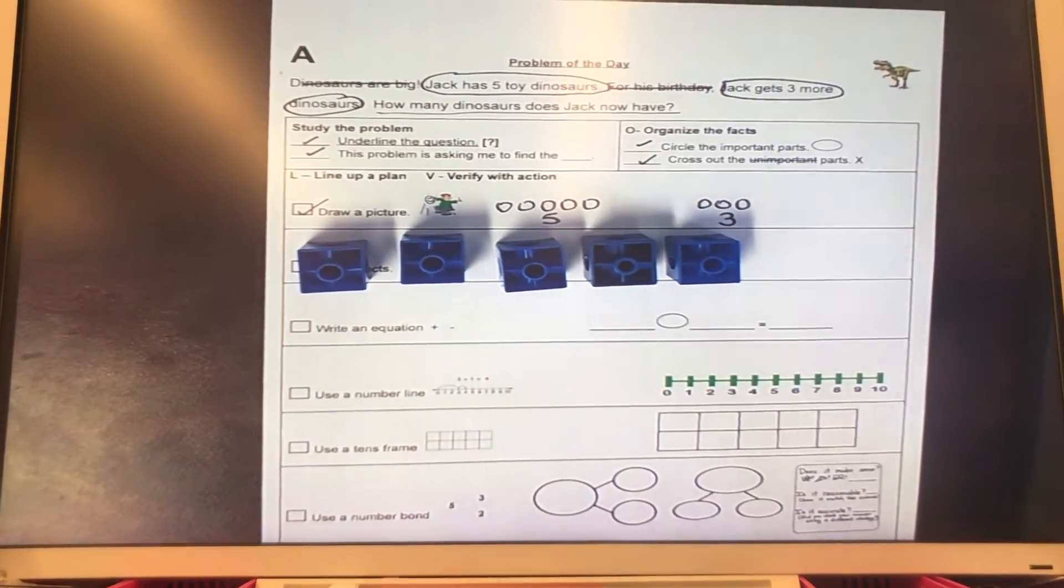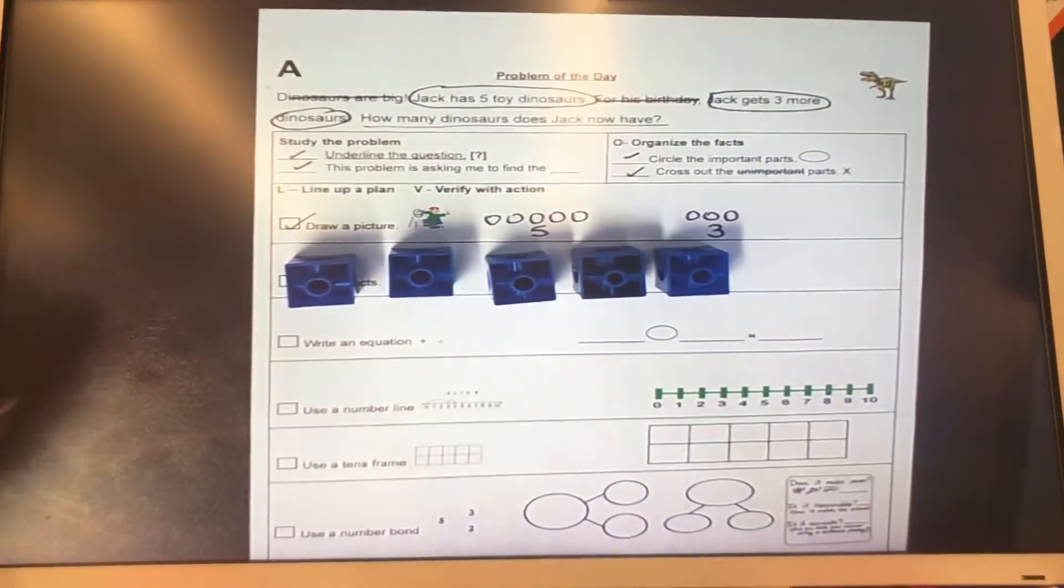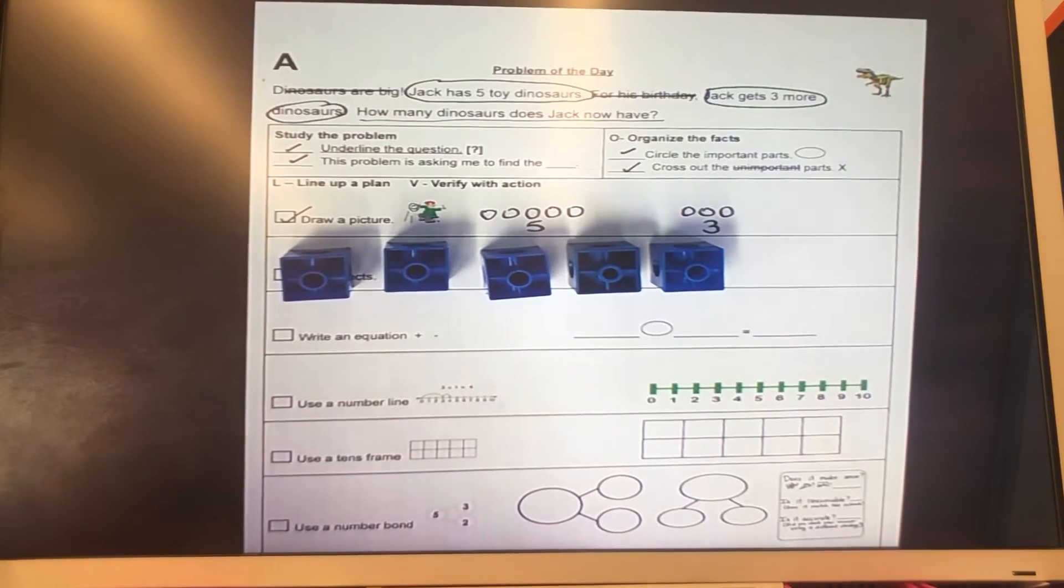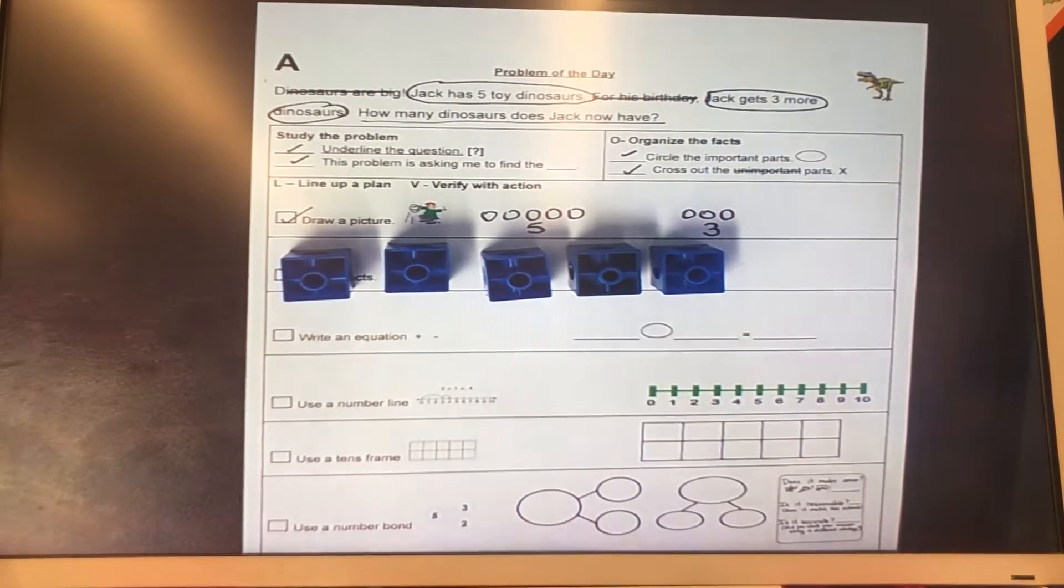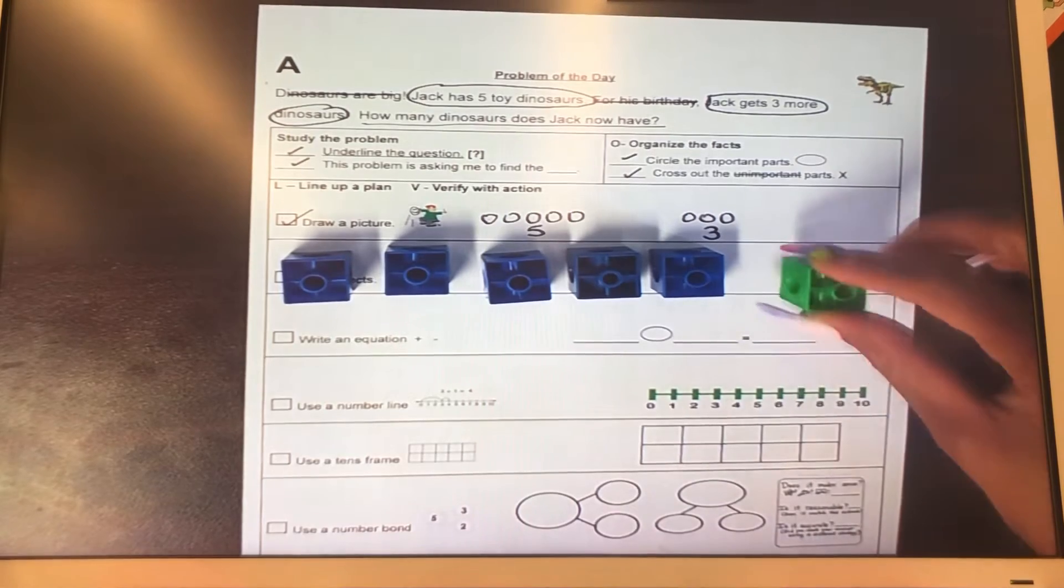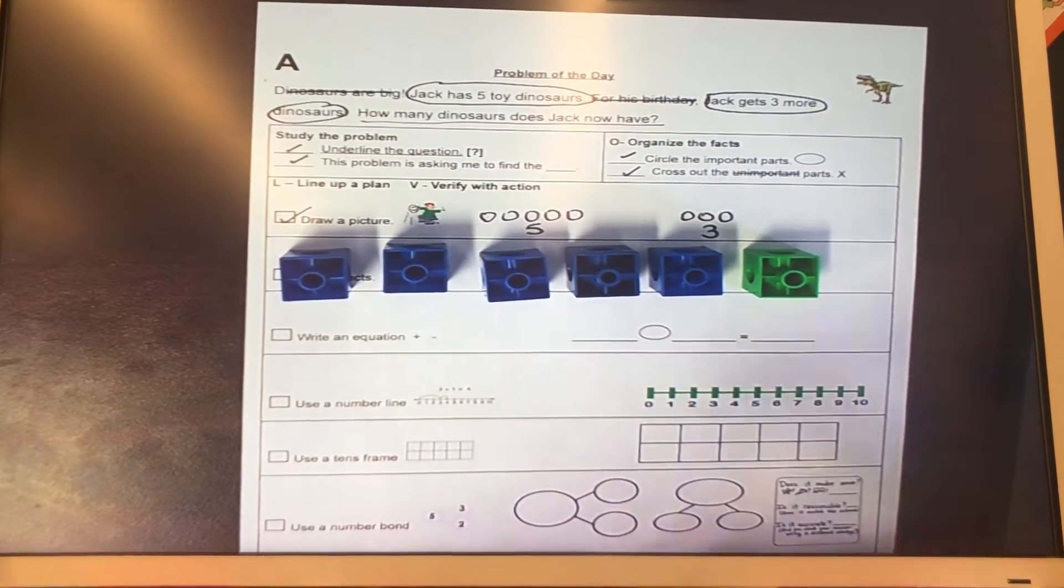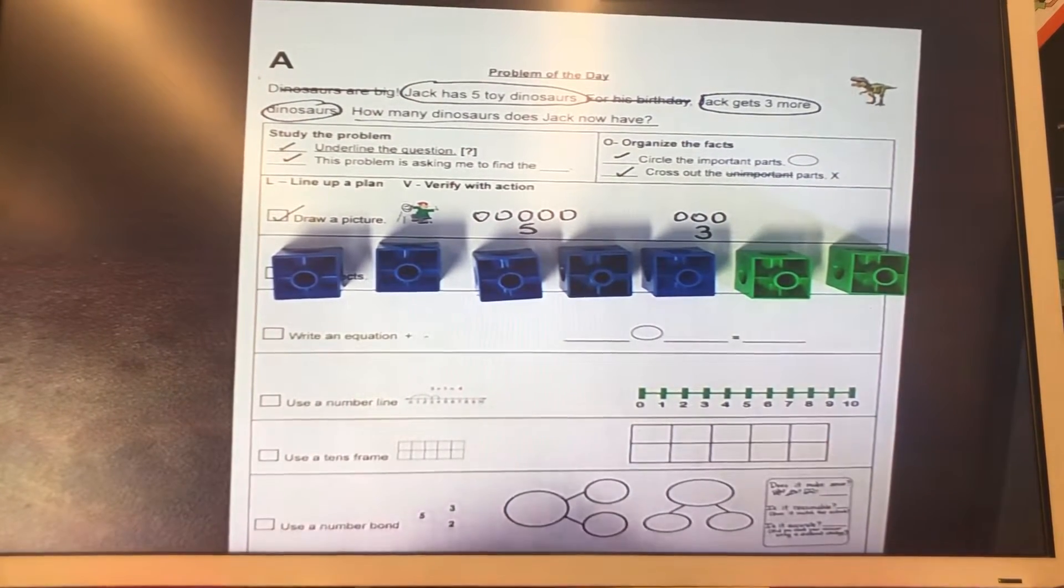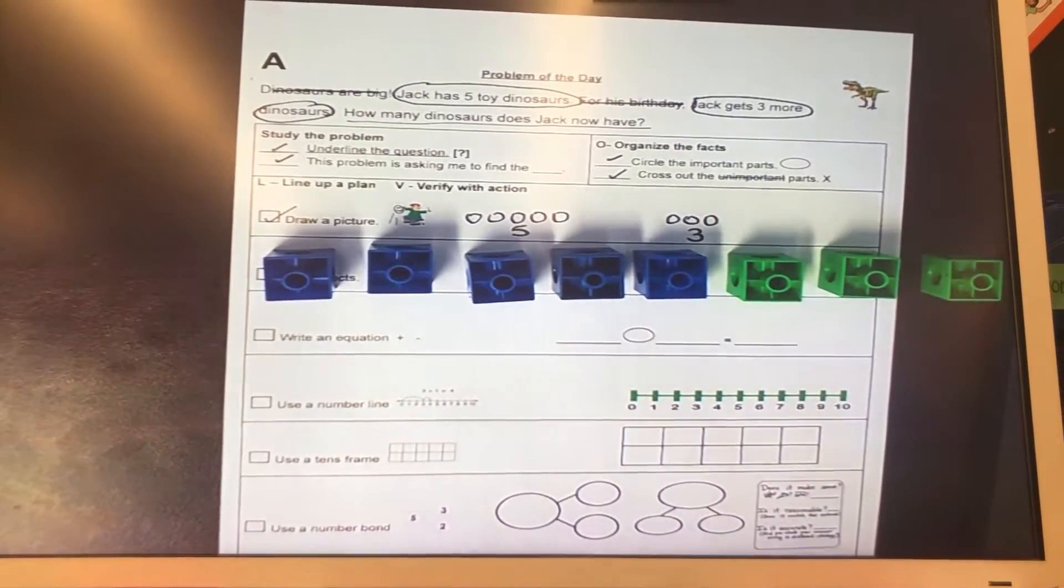Then Jack for his birthday got three more dinosaurs. So we need to put three more because we already agreed it's a put together problem. So here's my three more. One, two, three. Three more.